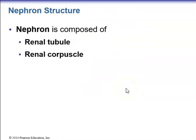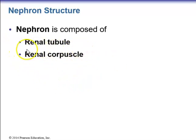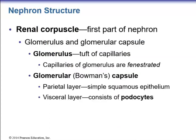The nephron is composed of two main structures: the renal corpuscle and the renal tubule. The renal corpuscle is the first part and is made up of the glomerulus plus the glomerular capsule, also known as Bowman's capsule. The renal tubule is responsible for the eventual formation of urine. The renal corpuscle includes the glomerulus and the glomerular capsule.